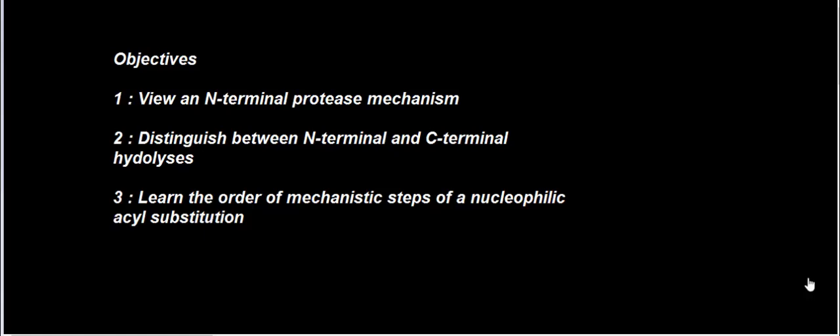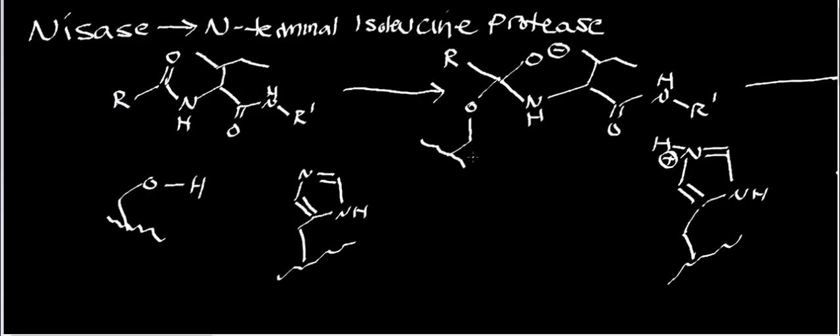In the past few videos we've looked at the hydrolysis of proteins using C-terminal proteases. In this video we're going to look at the mechanism of an N-terminal protease. By the end of this video you'll be able to distinguish between the mechanisms of an N-terminal protease and a C-terminal protease, predict which peptide bond gets cleaved with respect to the alpha carbon, and understand the mechanistic steps of a nucleophilic acyl substitution reaction.